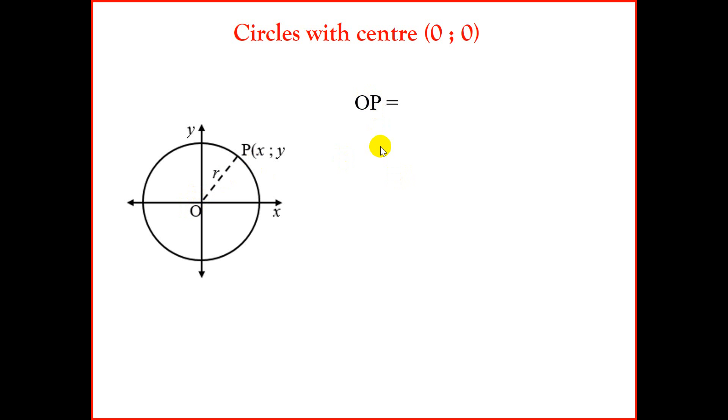We are going to use the distance formula. Distance formula will state that it is the square root of (x - 0)² plus (y - 0)². And if we look at x - 0, that is x², plus y - 0 is y². We're going to square both sides, and that will give us OP² equal to, and the square root will cancel off, giving us x² + y².